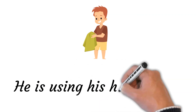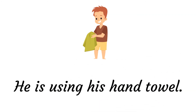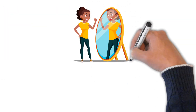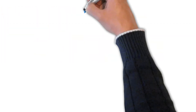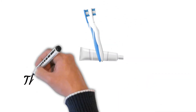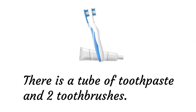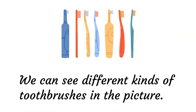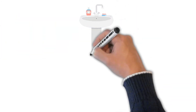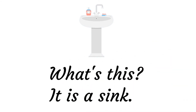Now let's practice some sentences. He is using his hand towel. She is looking in the mirror. There is a tube of toothpaste and two toothbrushes. We can see different kinds of toothbrushes in the picture. What's this? It is a sink.